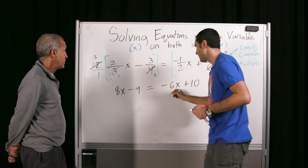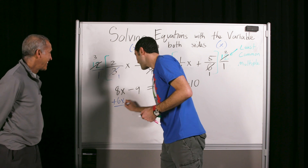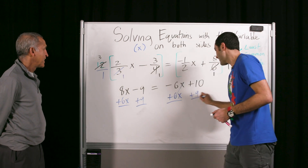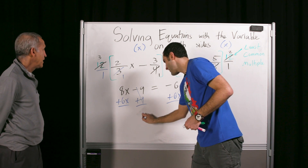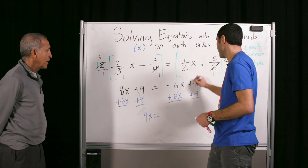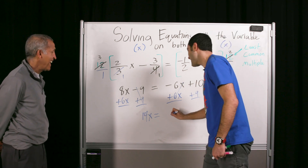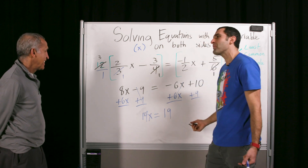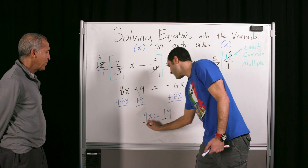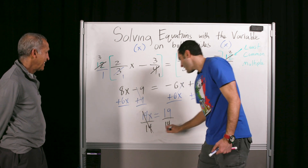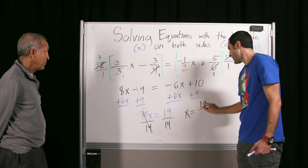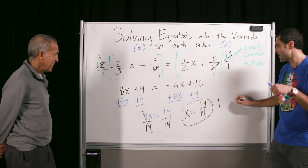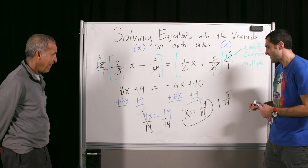Plus 6x to both sides, plus 9 to both sides. What do you get? 14x equals 19. Divide by 14. X equals 19 over 14 — and how many 14ths left? Five. So that's 1 and five fourteenths. Either form is fine. Good job!